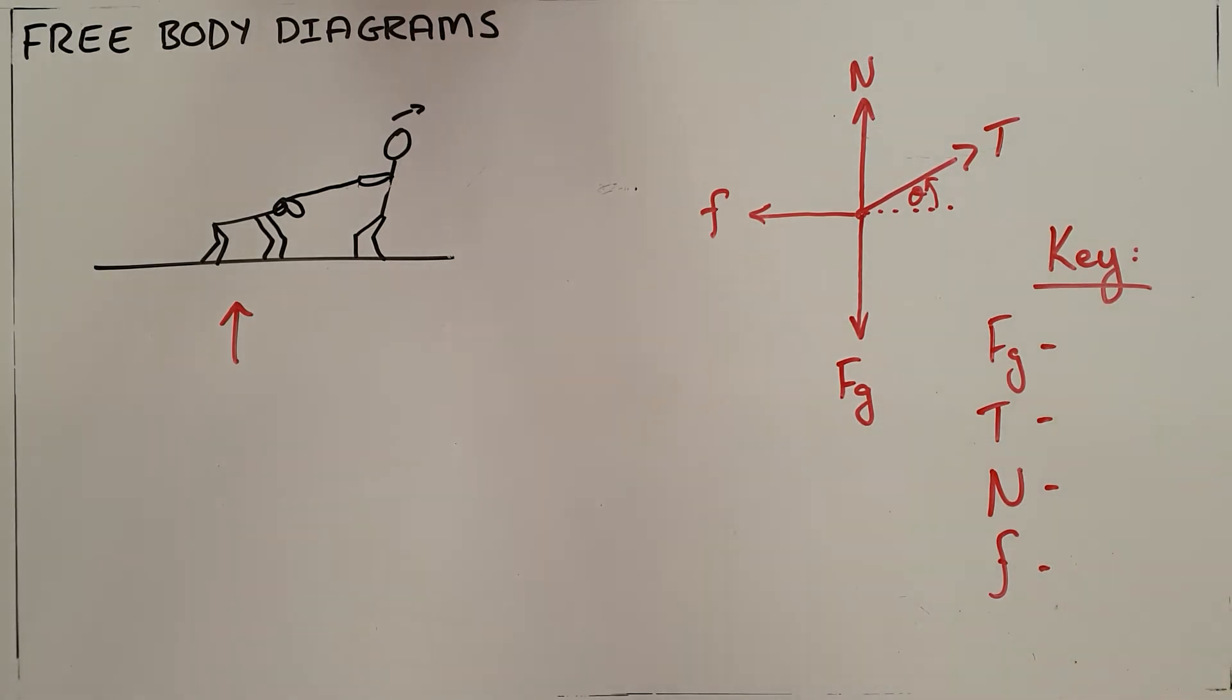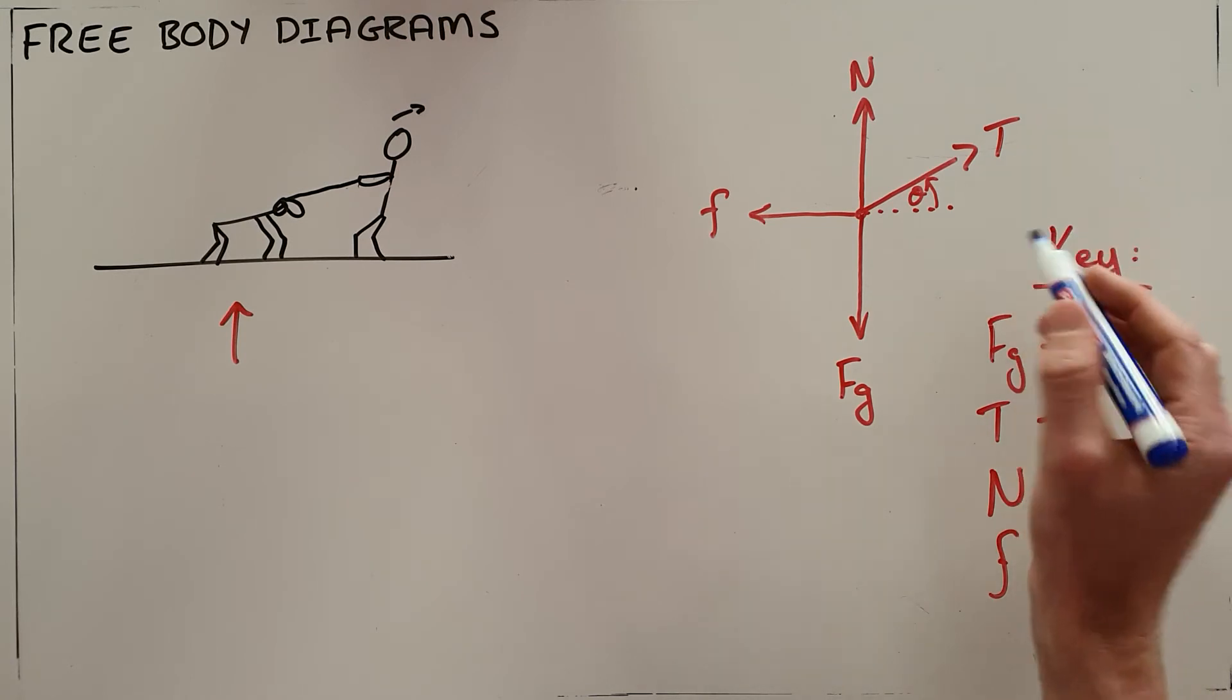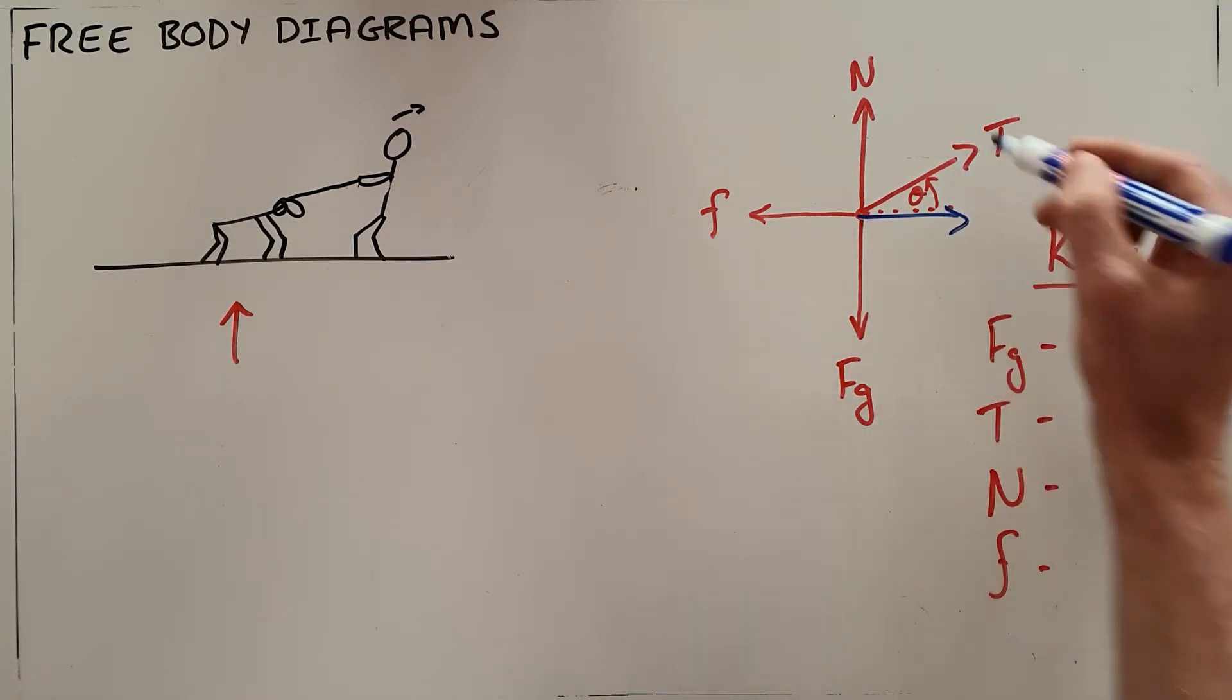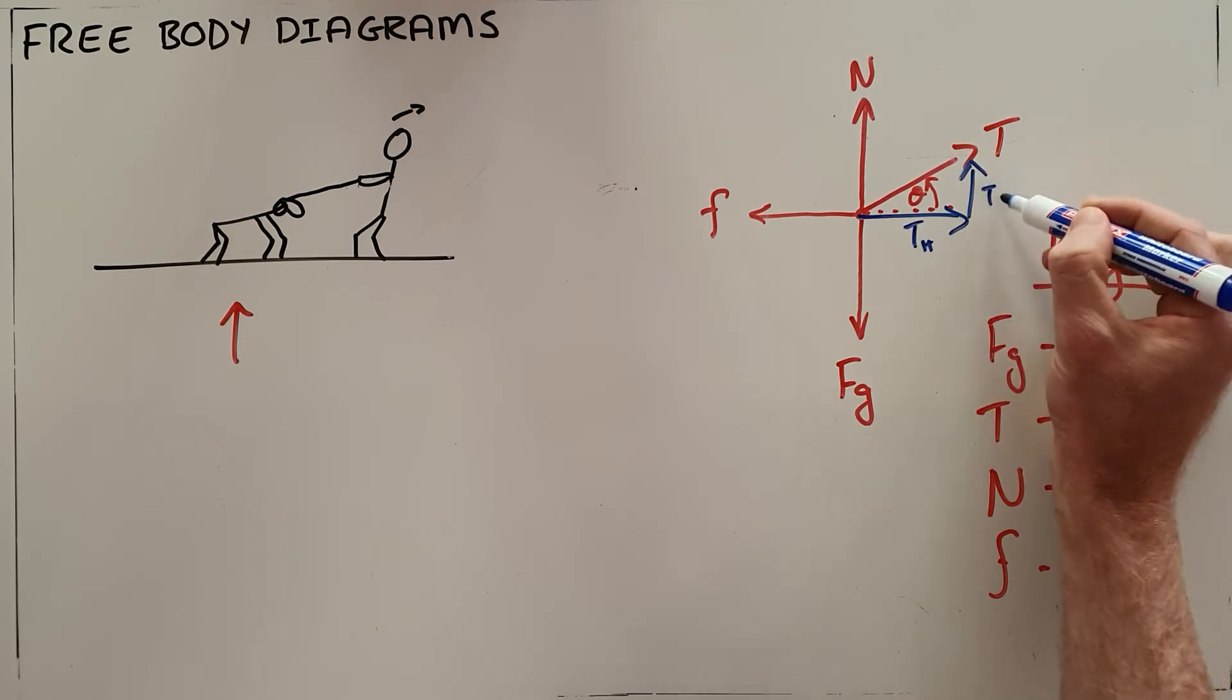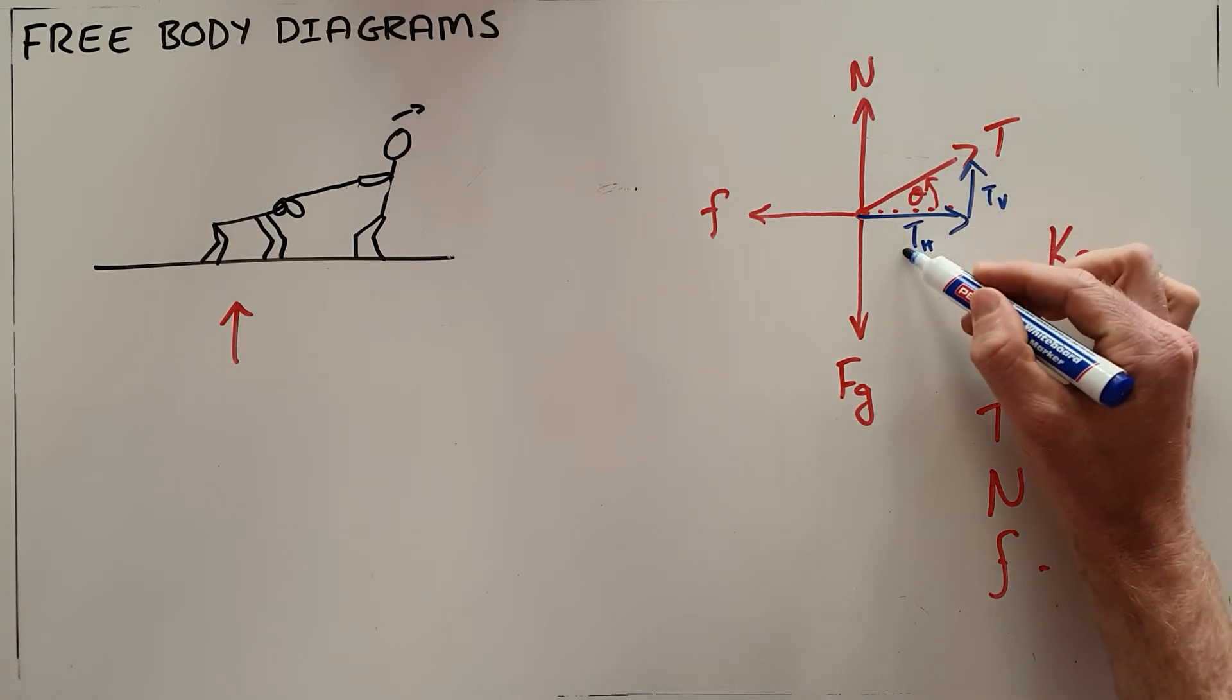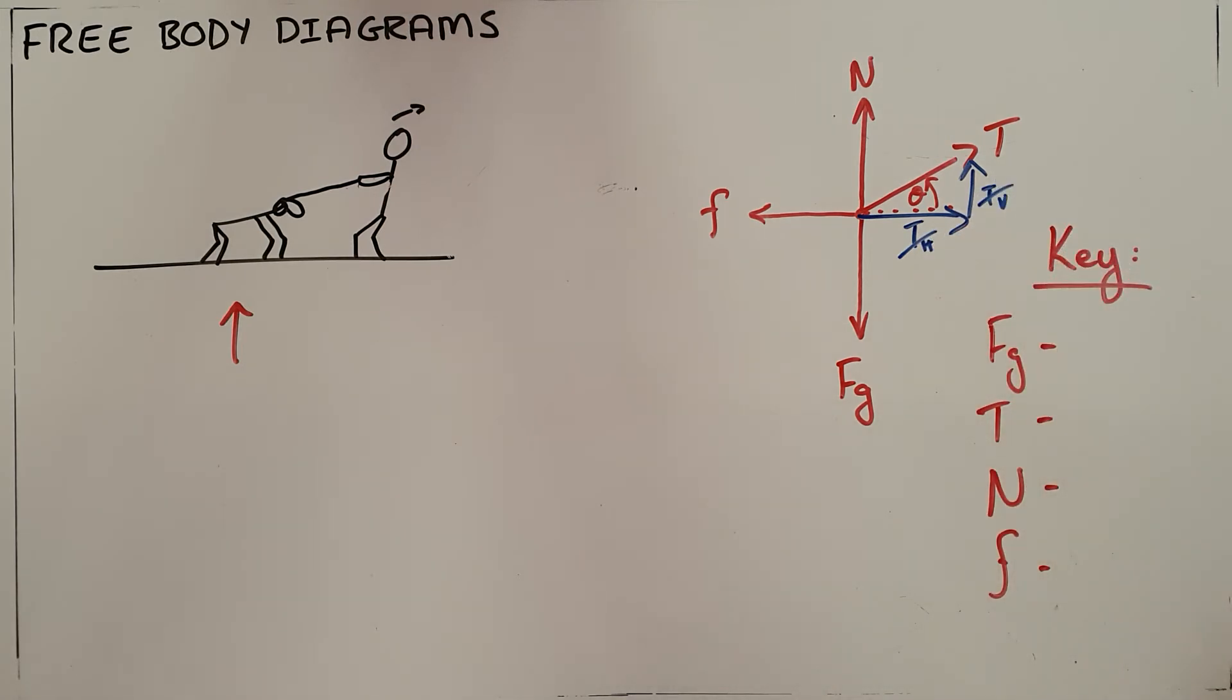A couple of important notes here: you may not draw components of forces onto a free body diagram. So there is a tension force acting at an angle. You may not show the horizontal and vertical components of that tension force because you are then implying that those forces are also acting on this object.